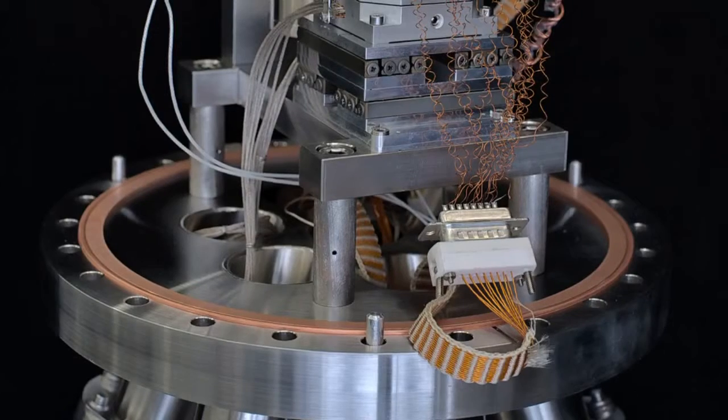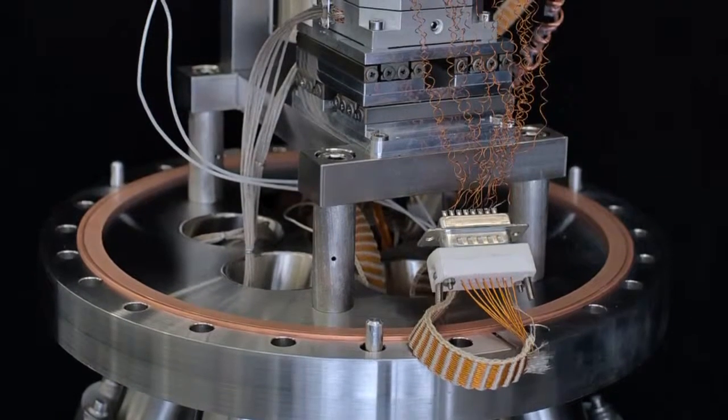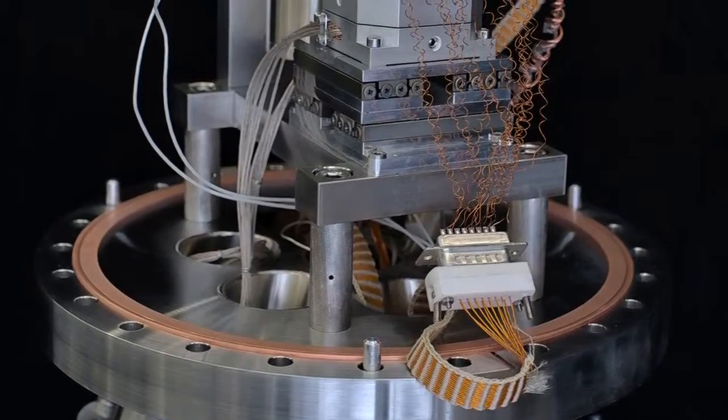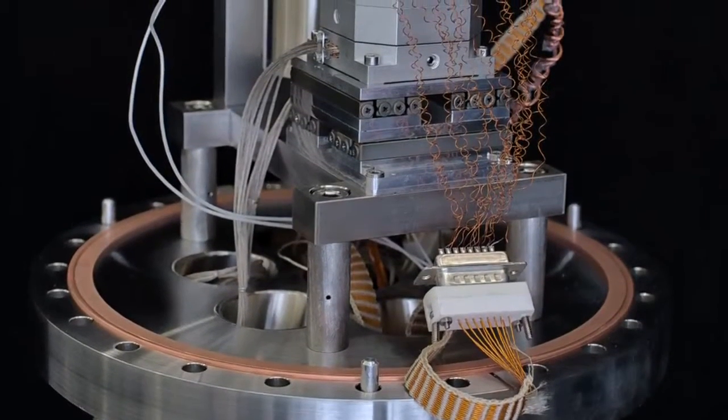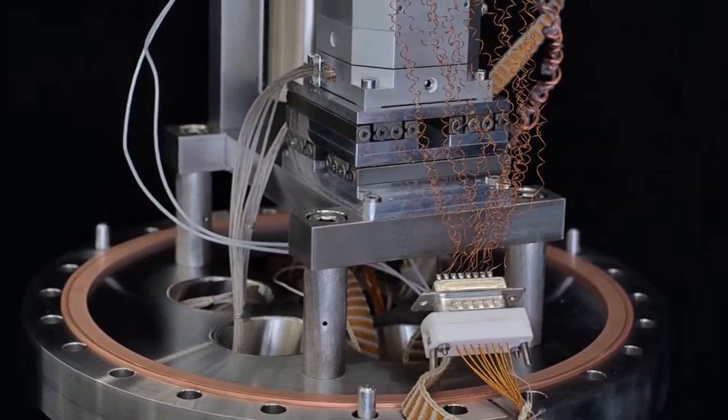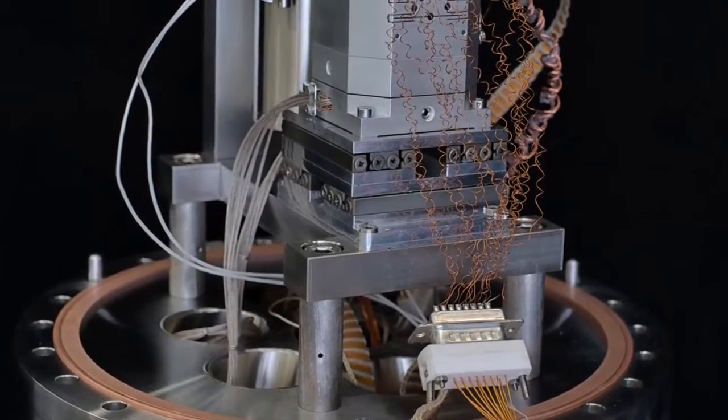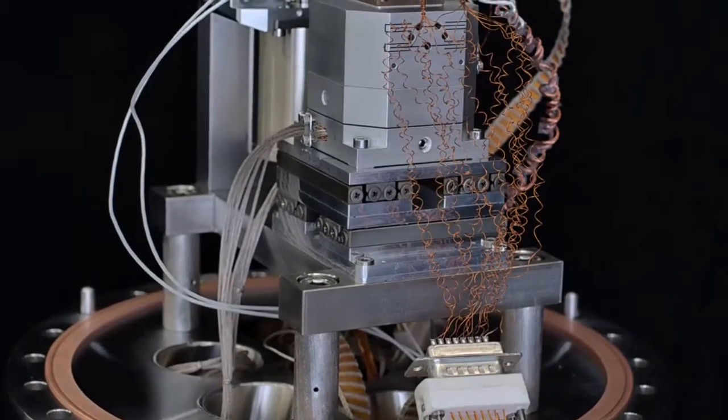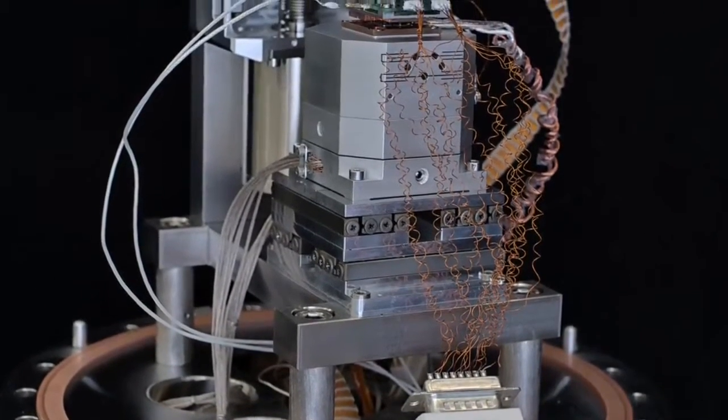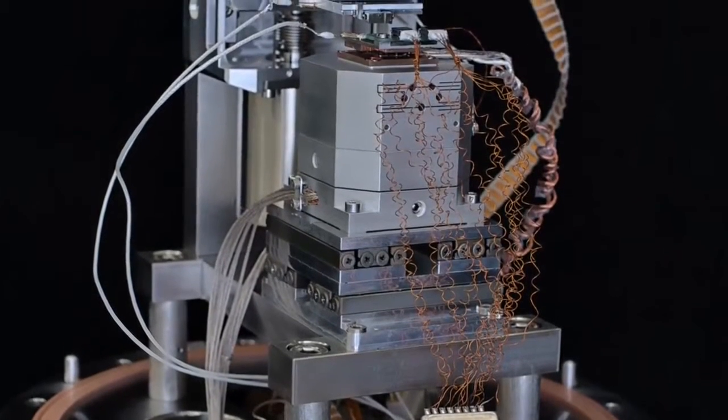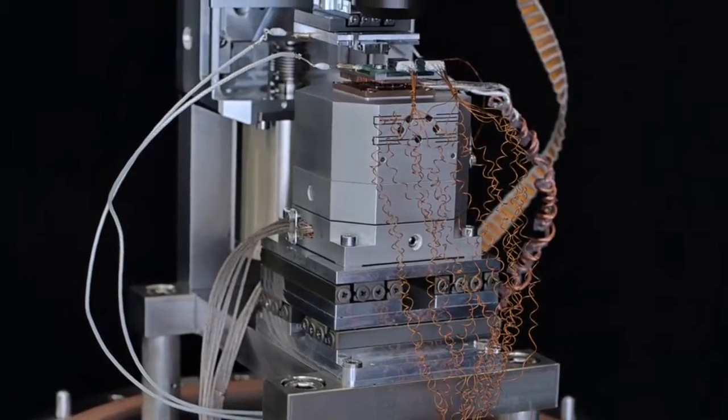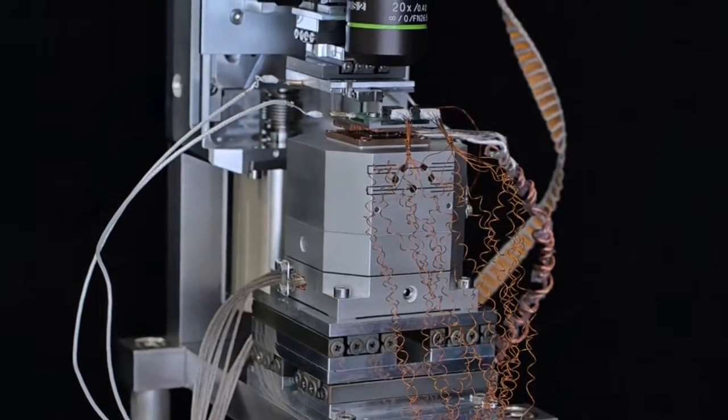Here you can see our scanning thermal microscope as it looks when it's outside the vacuum chamber. Down here we have the bottom flange with all the feed-throughs for electrical signals and the optical laser beam. Up here we have different kind of positioners—piezo positioners which enable us to move the sample with very high precision, up to sub-nanometer step size.